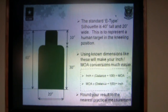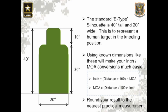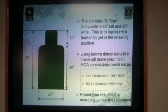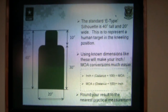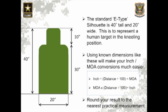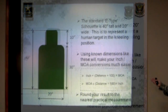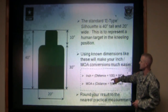The standard E-type silhouette is 40 inches tall and 20 inches wide — this is to represent a human-sized target in a kneeling position. Using the known dimensions of this target, you'll be able to make inches-to-minute-of-angle conversions very easily. To make your MOA conversion, do your inches divided by the distance and it gives you that minute of angle. Remember to only use the first number in the distance.